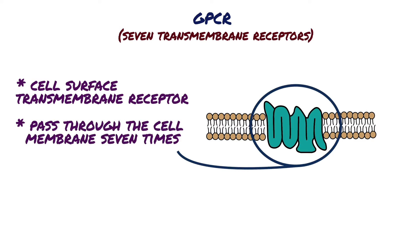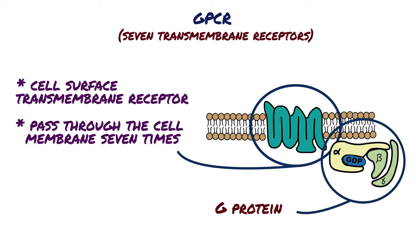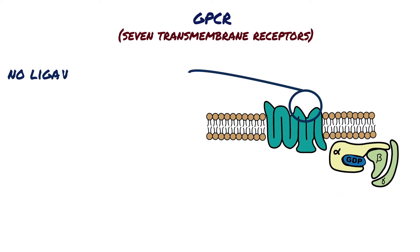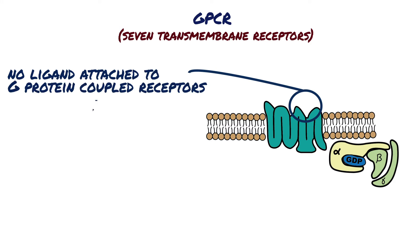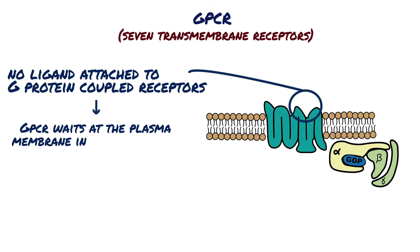Some parts of the receptor that protrude into the cell cytoplasm are coupled to G-proteins that include three parts: the alpha, beta, and gamma subunits. When there is no ligand attached to G-protein coupled receptors, the receptor waits at the plasma membrane in an inactive state. In the inactive state, the alpha subunit of the G-protein is bound to GDP.